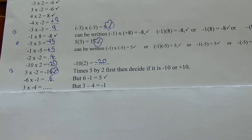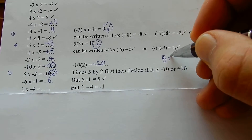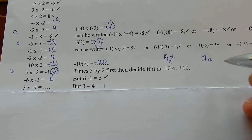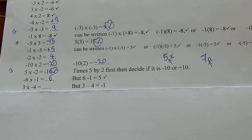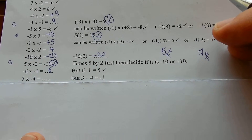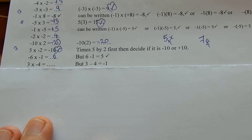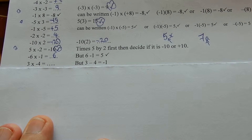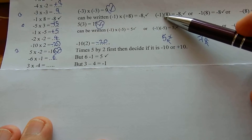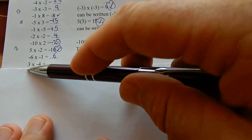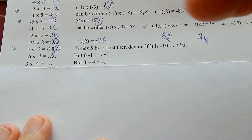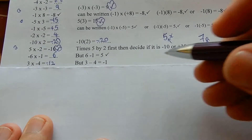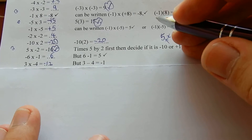Two brackets — that's times. 5x — that is 5 times x. 7a — that is 7 times a. When there's nothing written between two things, like a number and a letter, or two brackets, then it's times. 3 times 4 is 12 — there's only one minus, so minus 12. But 3 minus 4 is minus 1.